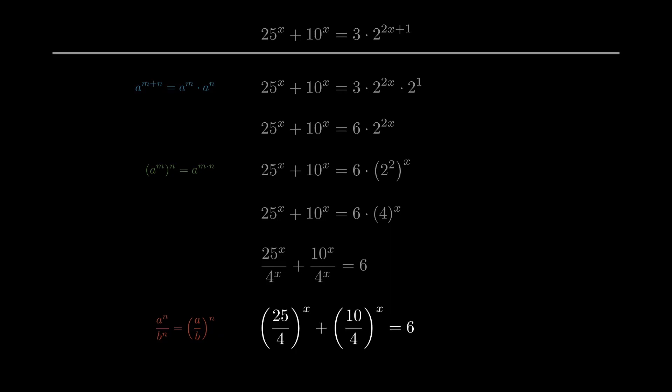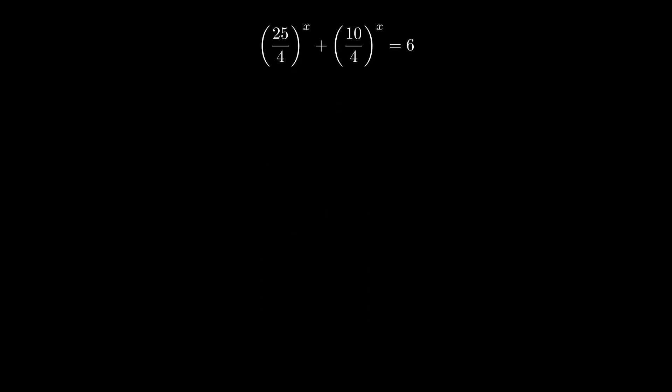Now we're really getting somewhere. Since this is very convenient, 10 over 4 is the same as 5 over 2, and 25 over 4 is 5 over 2 squared.